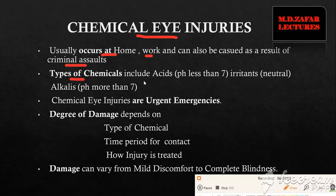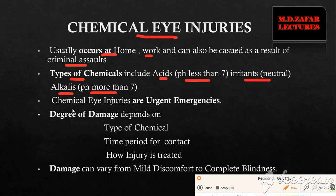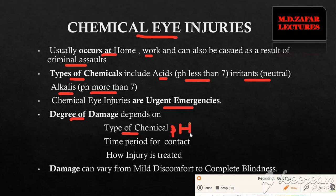The types of chemicals in this category include acids which have a pH less than 7, irritants which are neutral substances, and alkalis which have a pH of more than 7. Chemical eye injuries are urgent emergencies and must be treated properly. The degree of damage depends upon the type of chemical, especially its pH, the time period of contact, and how the injury is treated initially in the emergency department.